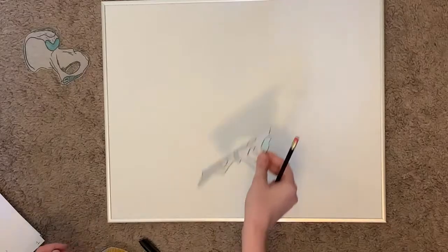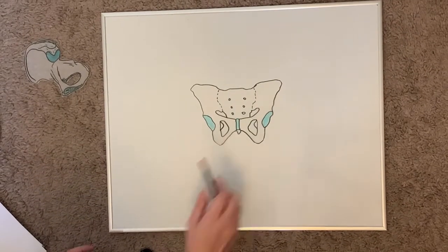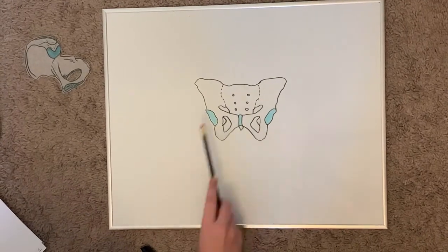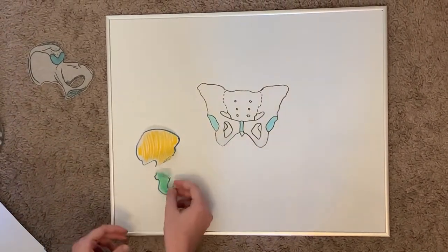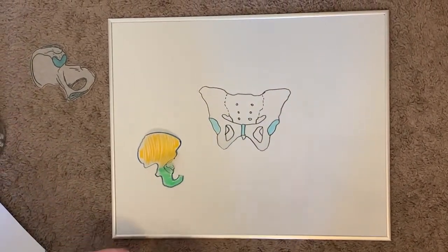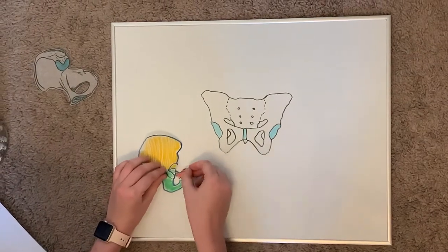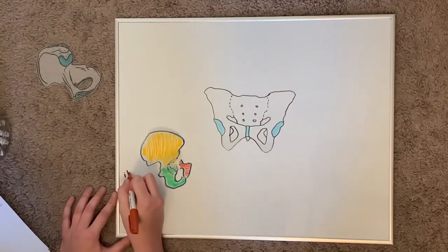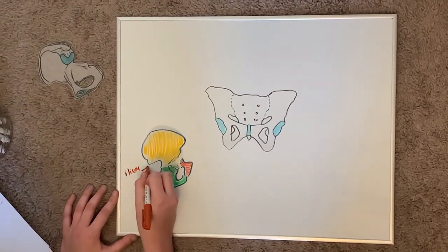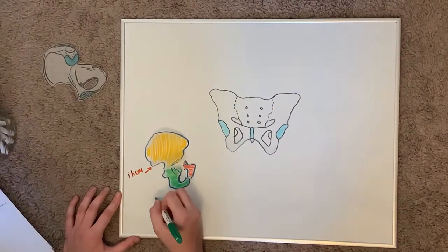To get ourselves oriented, let's start with an overview of the osteology of the pelvis. The pelvis is made up of four bones: two hip bones, the sacrum, and the coccyx. The hip bone, also known as the os coxa, is made up of three bones that are fused together: the ilium, the ischium, and the pubis.